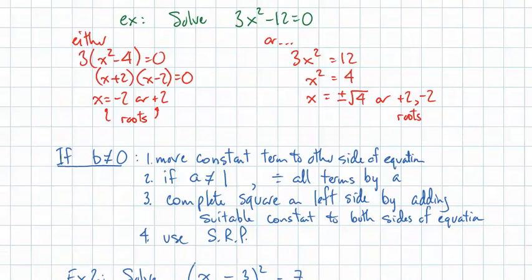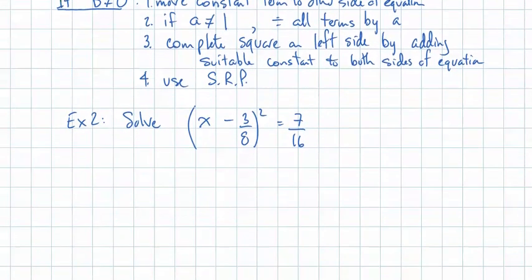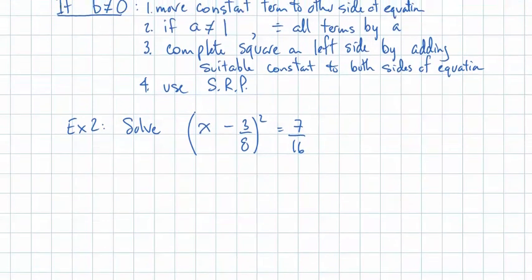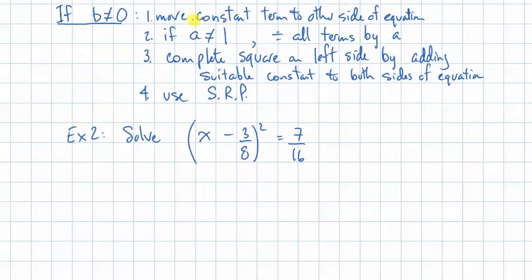First one. This is a relatively simple one, because it's already written as something squared. So, looking back at my steps, I've already got the constant term moved to the other side of the equation.